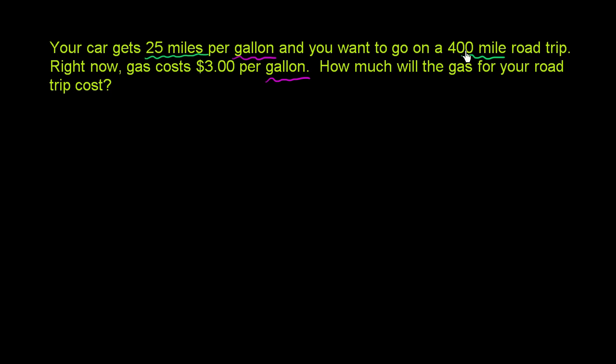So let's see. They tell us they're going on a 400-mile road trip. For 400 miles. The first thing I'd want to think about is how many gallons am I using? And then once I know how many gallons I'm using, I know it's $3 per gallon, so I can multiply the number of gallons by $3.